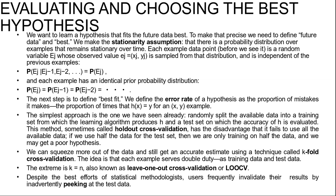This method is sometimes called holdout cross-validation, and it has the disadvantage that it fails to use all available data. If we use half the data for the test set, we are only training on half the data and may get a poor hypothesis. On the other hand, if we reserve only 10% for the test set, we may by statistical chance get a poor estimate of the actual accuracy.